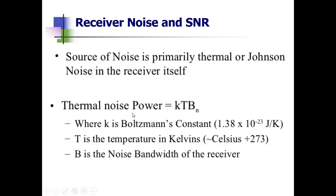The expression for thermal noise is KTBn, which you may have seen in previous semesters. This thermal noise magnitude is directly proportional to the bandwidth and the absolute temperature of the ohmic portions of the receiver input stages. The available thermal noise power, measured in watts, is generated at the input of the receiver with bandwidth Bn in Kelvin, where K is Boltzmann's constant.